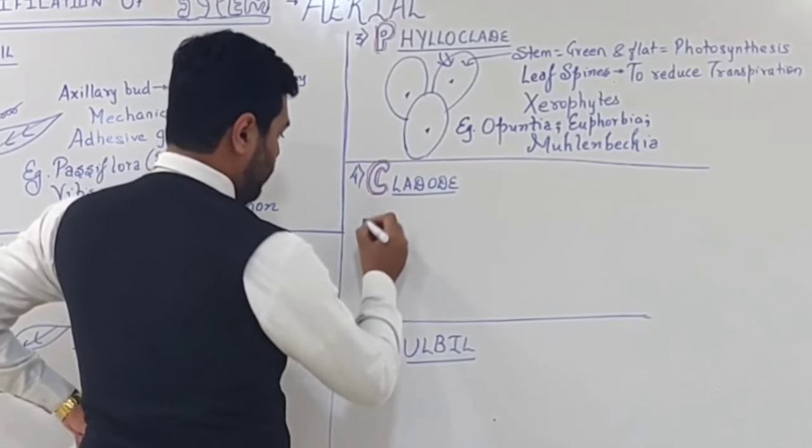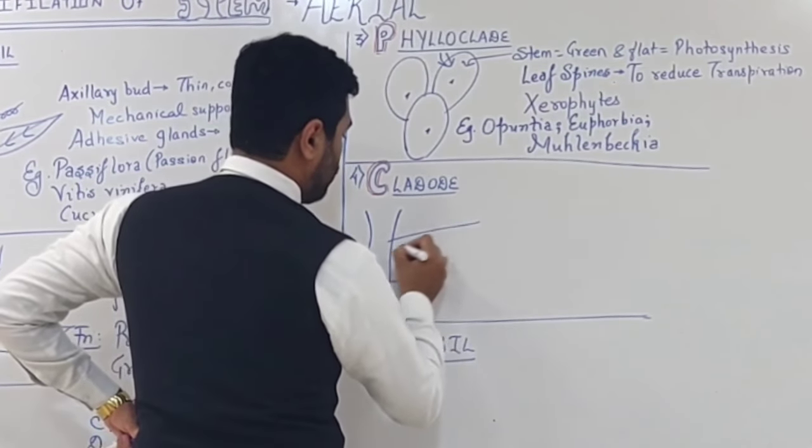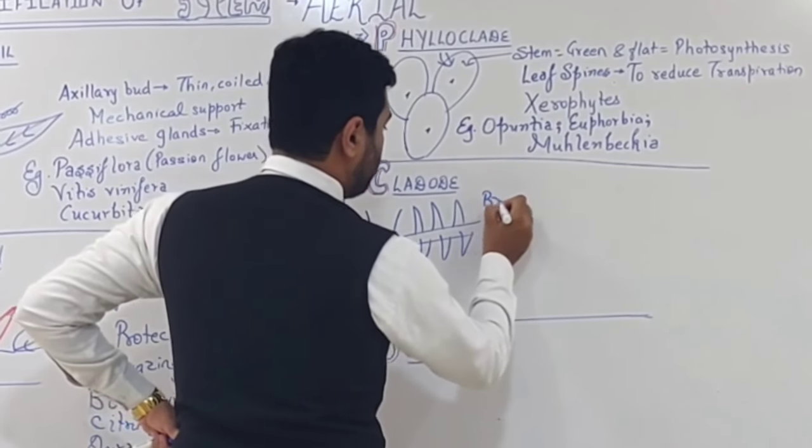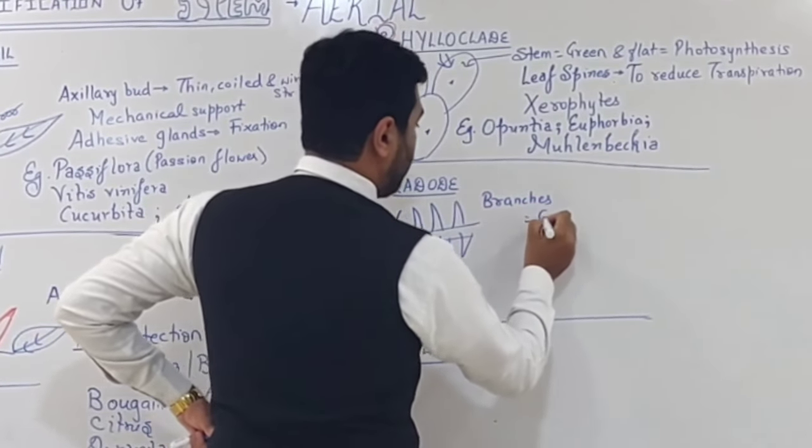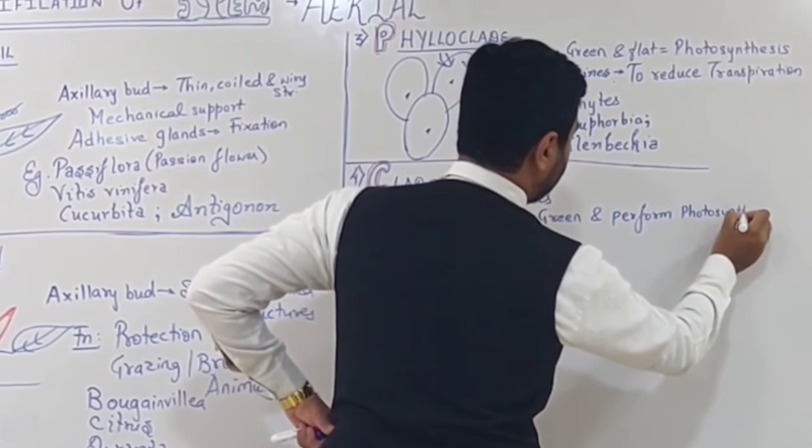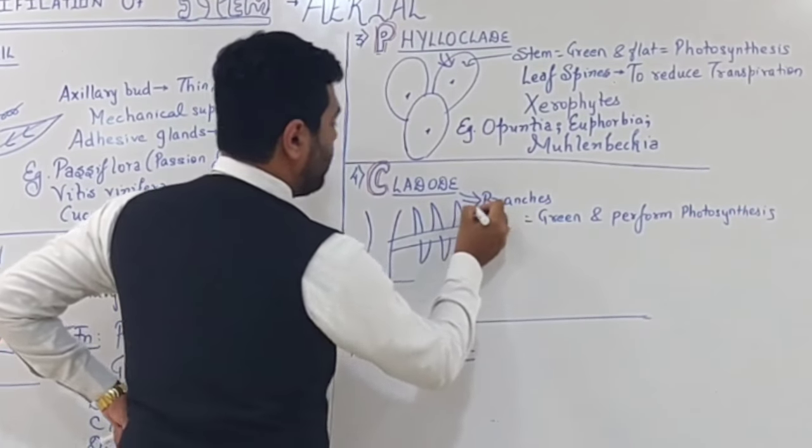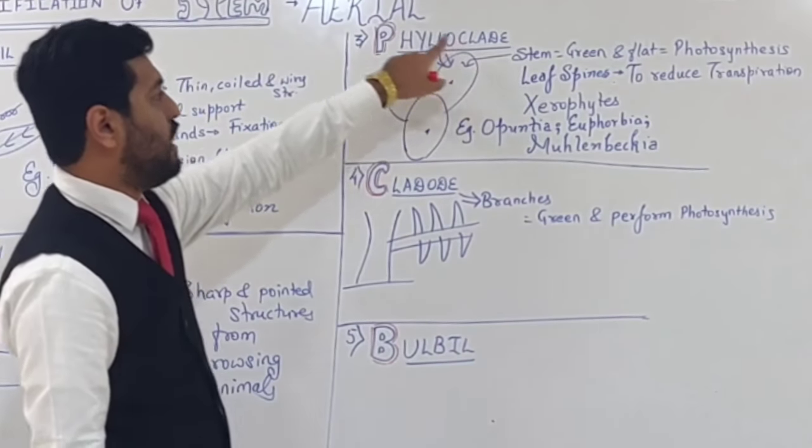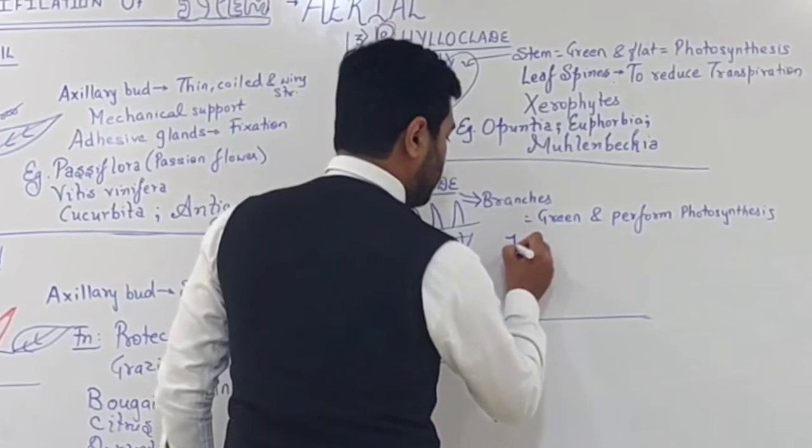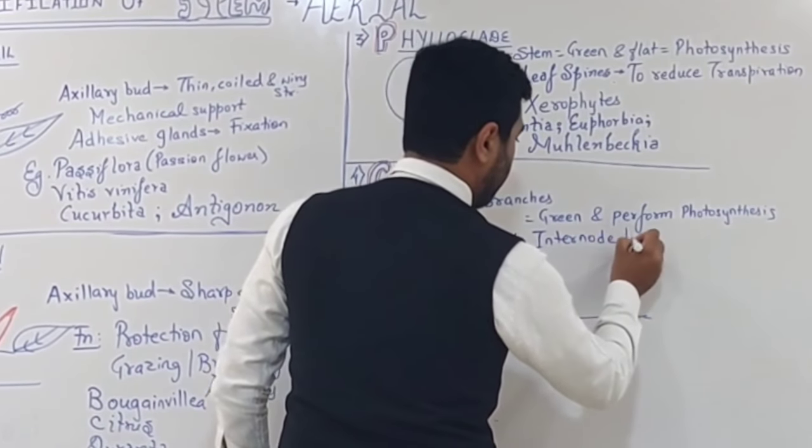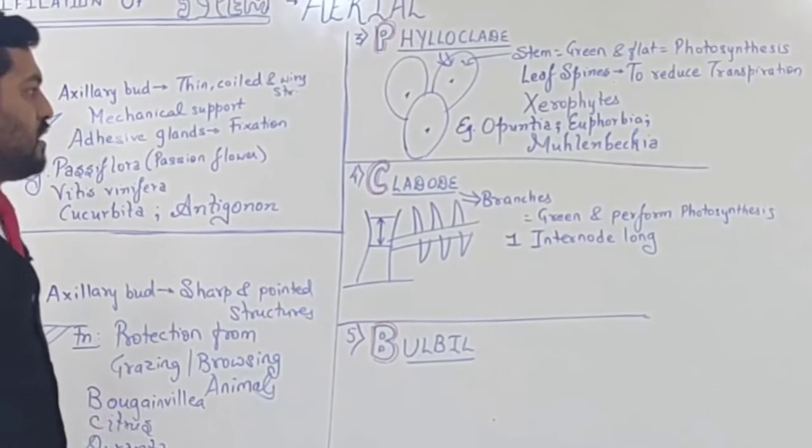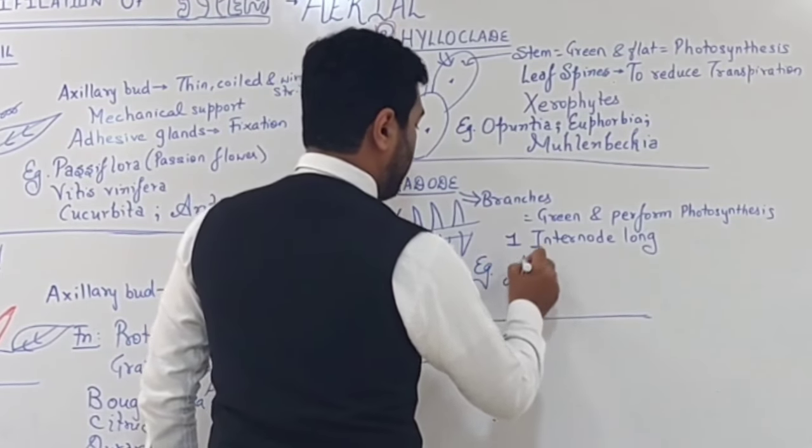Next modification is cladode. In cladode, the stem, its branch, or further branches develop. These branches become green and perform photosynthesis. If such branches perform photosynthesis, we call them cladode. So if stem does photosynthesis, it's phylloclade; if branch does it, it's cladode. The branch length is one internode long. If this is a node, the branch size is one internode length.